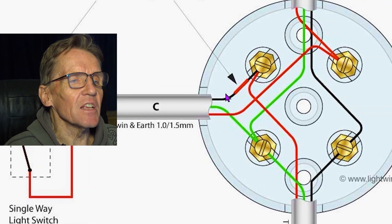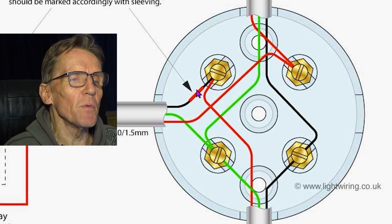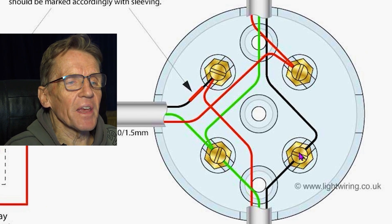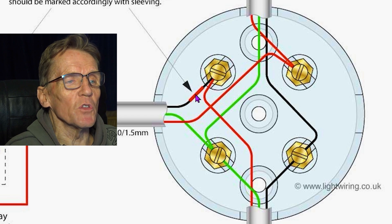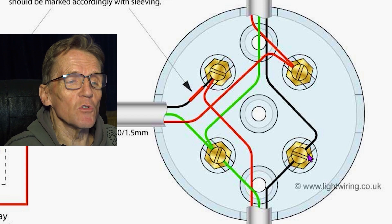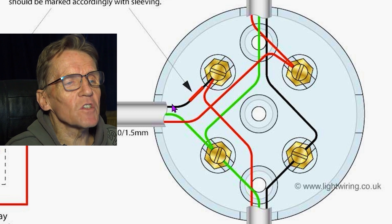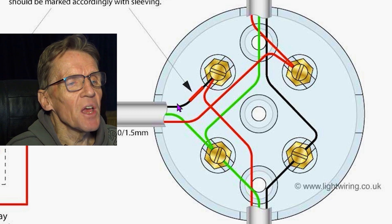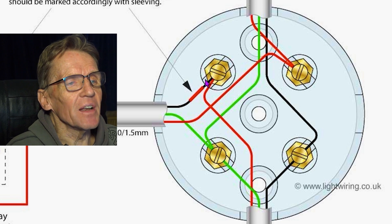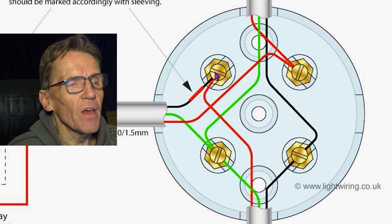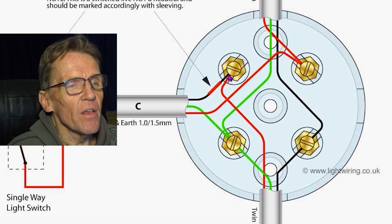So when it comes back into the light fitting, it's not a neutral, and this is where people go wrong because they take that black wire and they connect it up to there. And of course what you're doing is you're connecting a live to a neutral, and that's why it goes bang. So as long as you remember, when that wire is coming back from the switch, it is actually alive and it's got to go into the live.